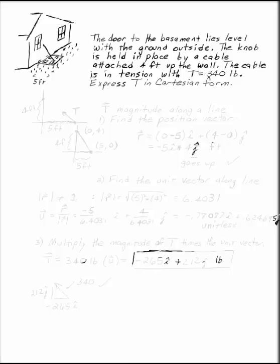The door to the basement lies level with the ground outside. The knob is held in place by a cable attached four feet up the wall. The cable is in tension with a load of 340 pounds. Express T in Cartesian form.